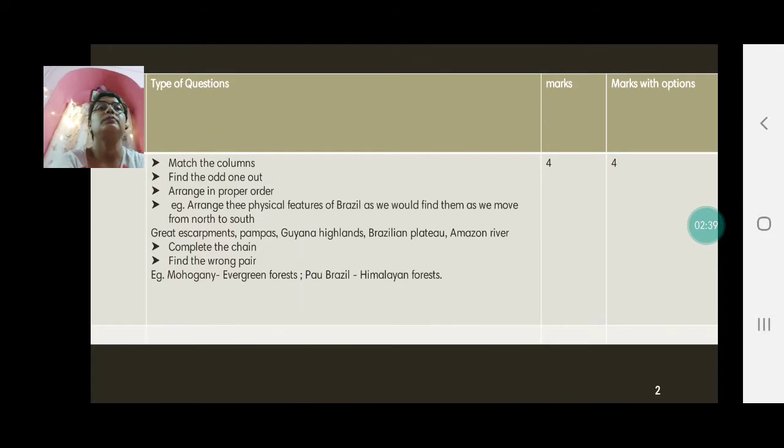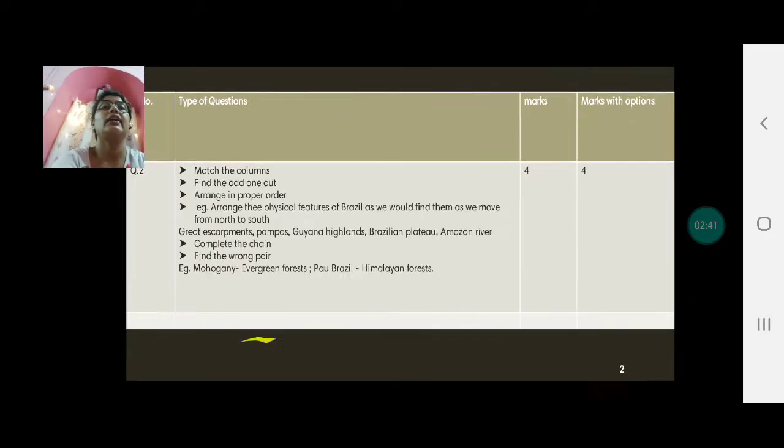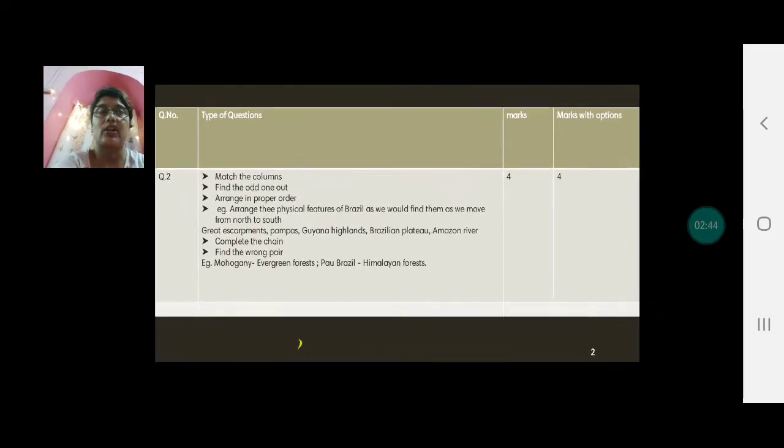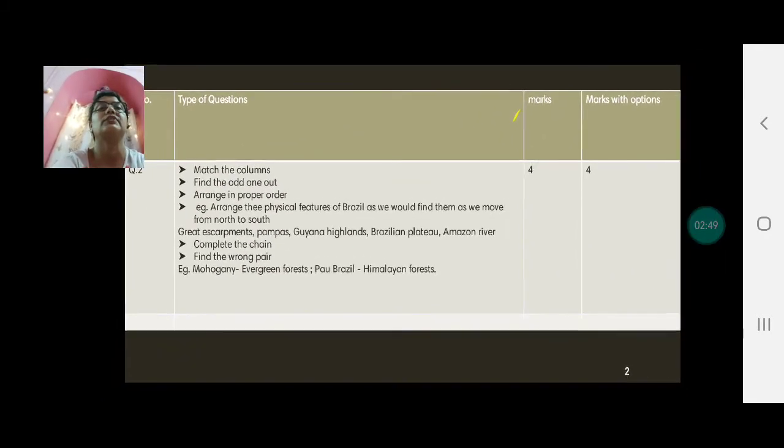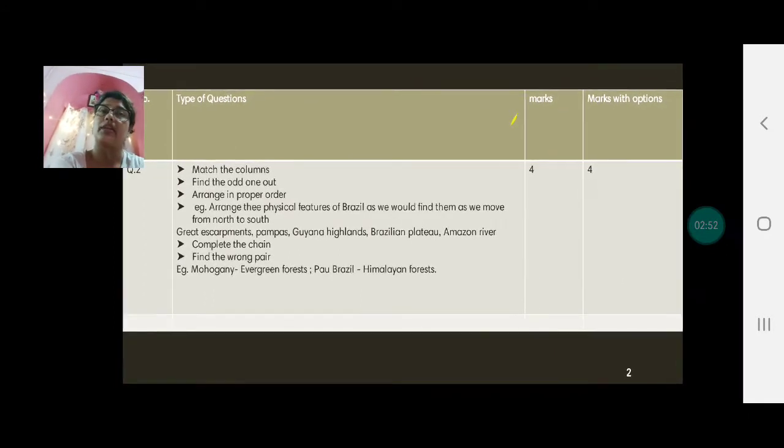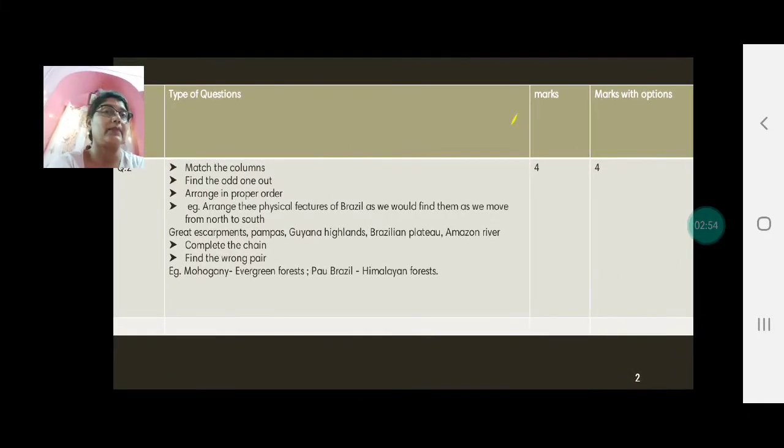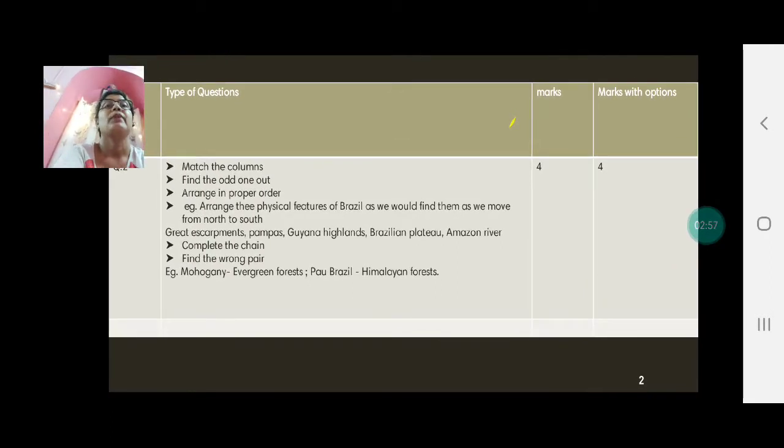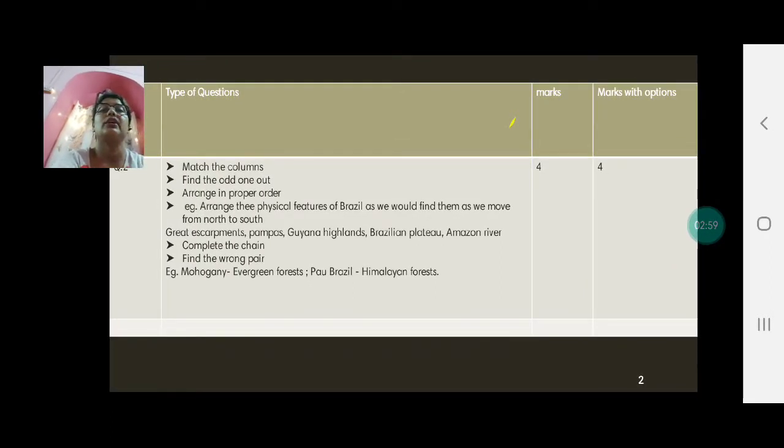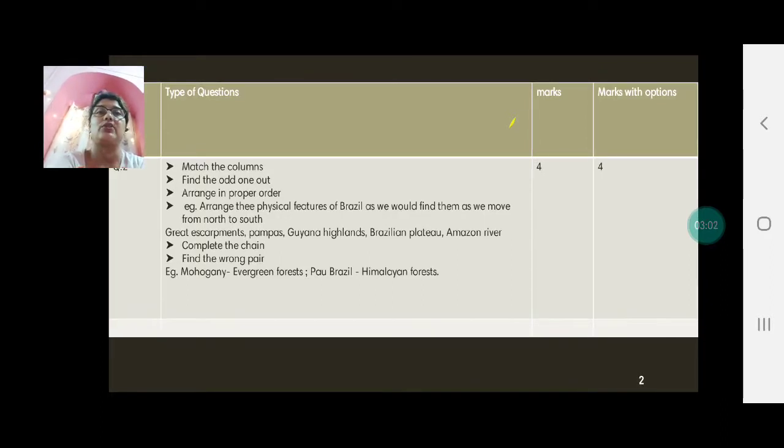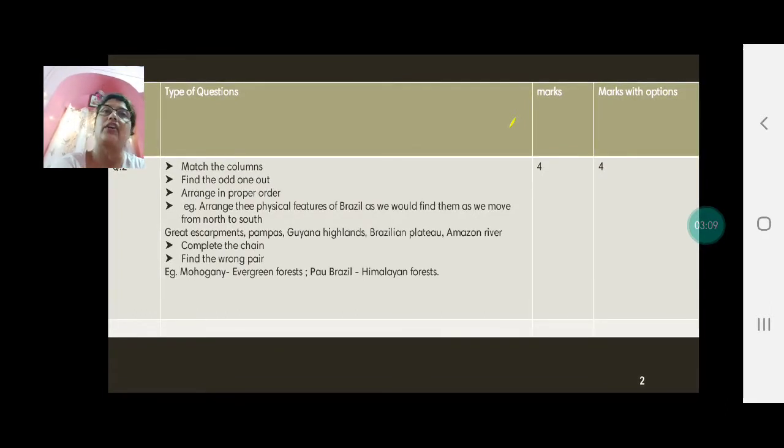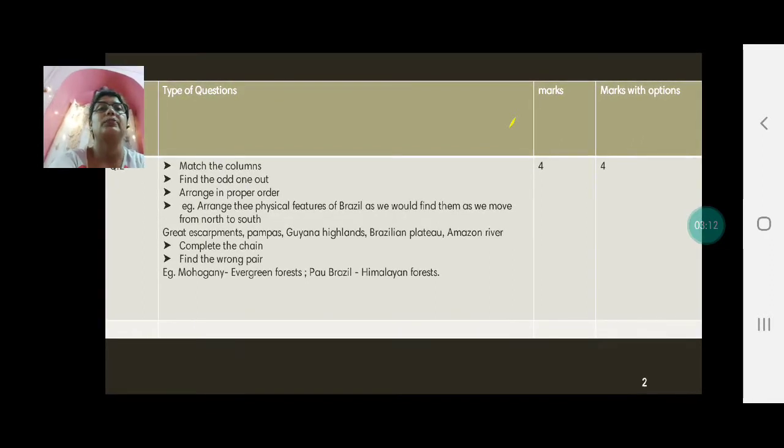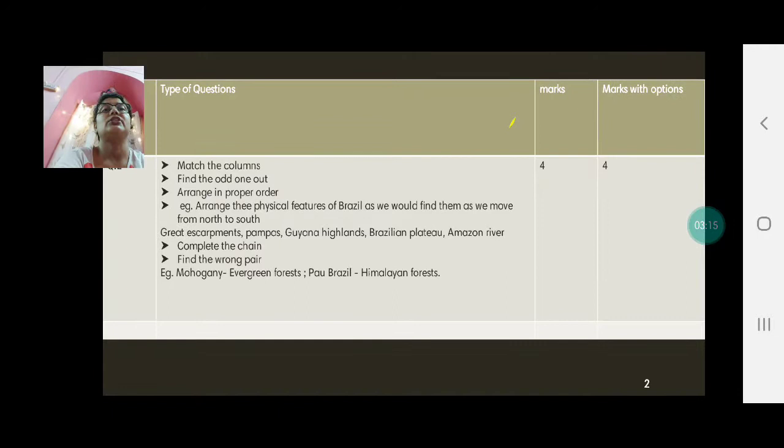Then question number 2. Now question number 2 is match the columns. It could be any of these. There can be 2 from here and another 2 because there are 4 marks for this. Or all 4 could be match the columns. Variety, types of questions, depends and it can change. Match the columns. So here you have to write column A. Say if you have 1, 2, 3, 4 and column B, do not write 3, 2, A, C, B that way. Just write the correct answer in column B. No need to put any numbers at all.